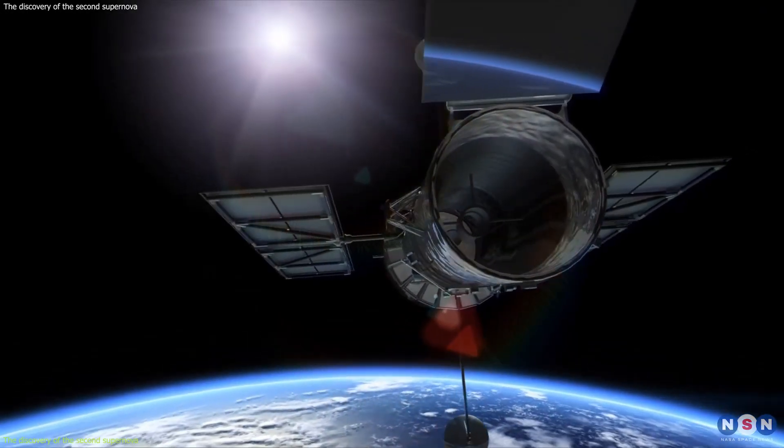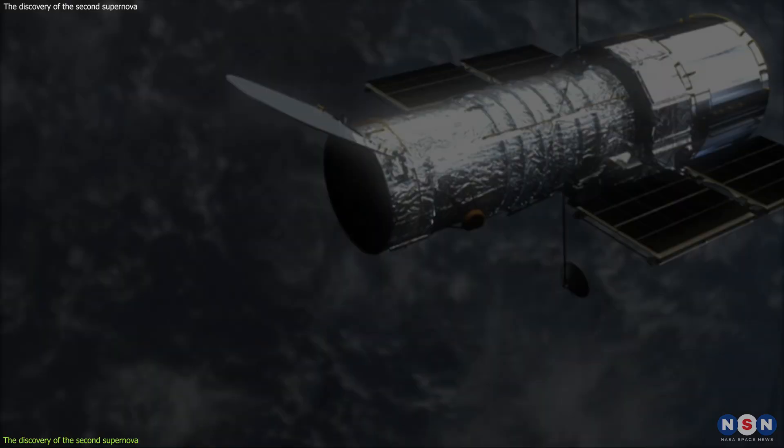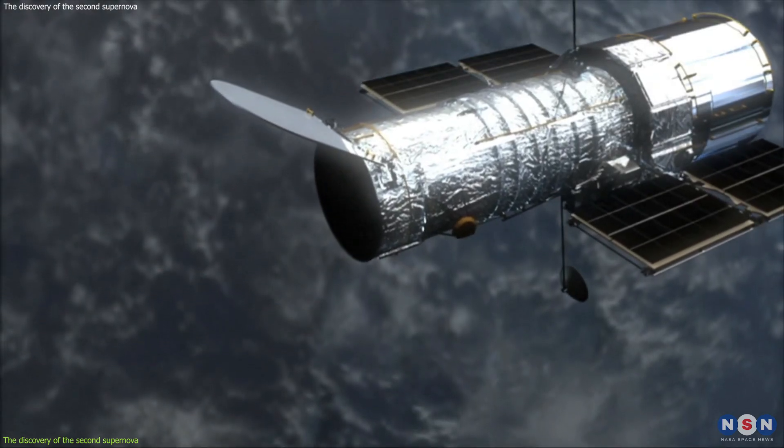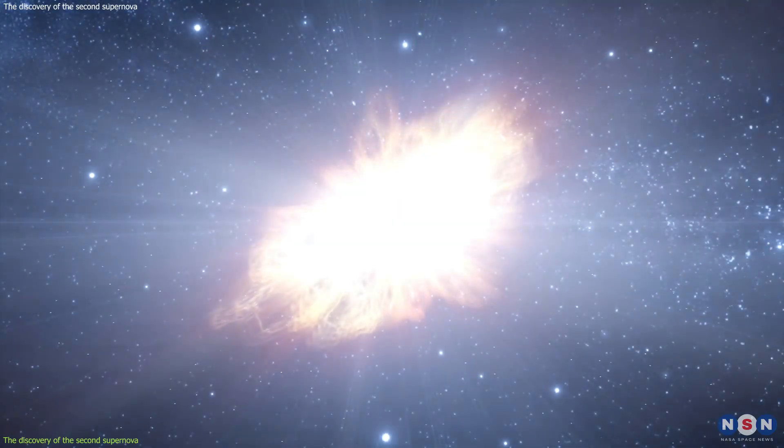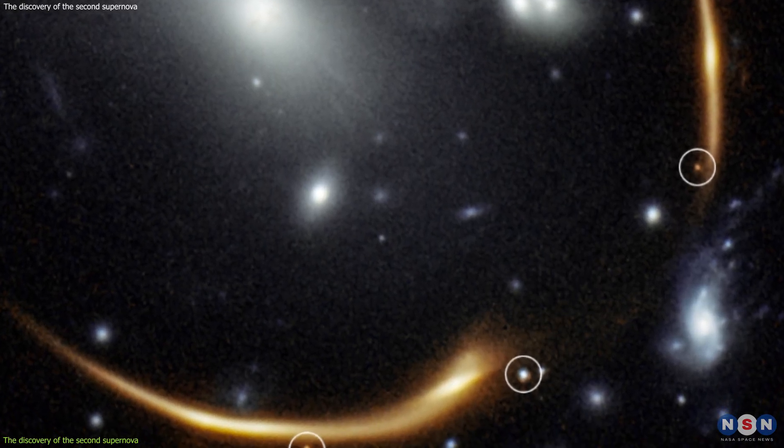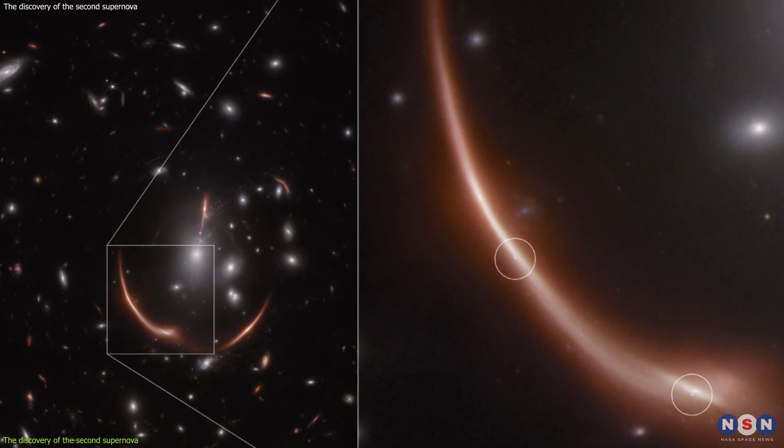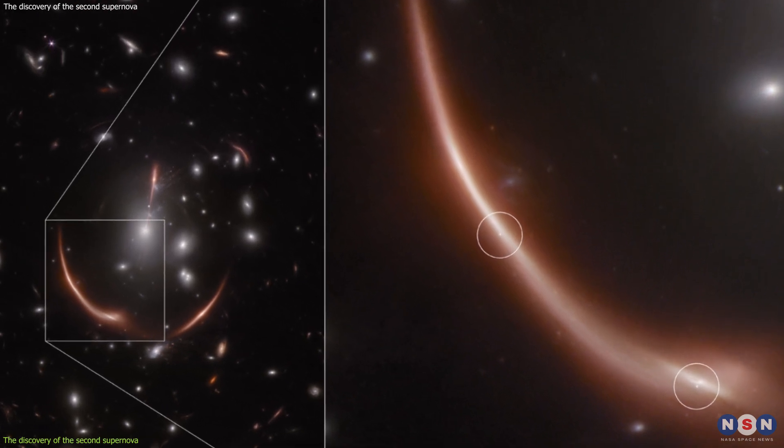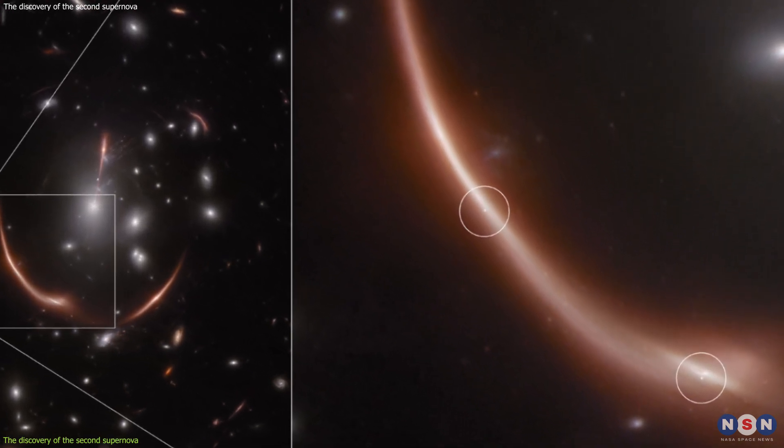But this was not the first time that a supernova was seen in this galaxy. In 2016, the Hubble Space Telescope, which is Webb's predecessor and companion, detected a supernova in another image of the same galaxy. This supernova was dubbed Requiem. But what if I told you that the second supernova that Webb detected is also Requiem? How is that possible?